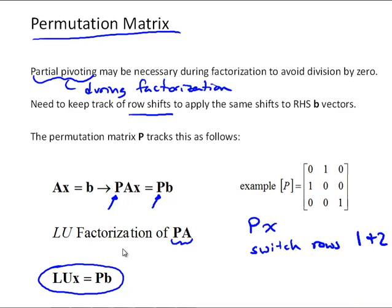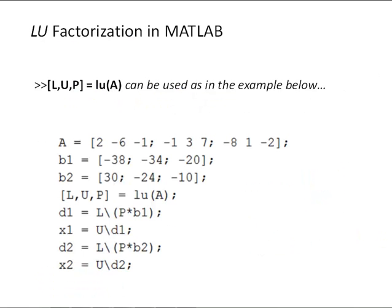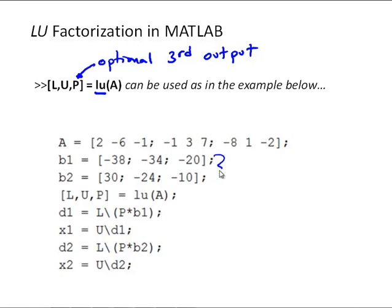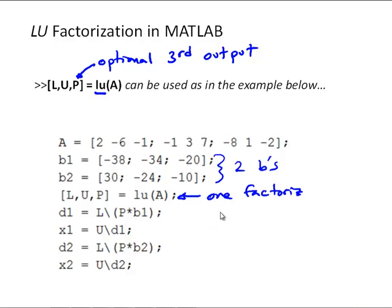Let's look at how to implement this in MATLAB. You can do an LU factorization using the built-in function LU. It has the permutation matrix as an optional third output, and in general it's a good idea to use it. Here's an example solving the same linear system A for two different right-hand side vectors. We do the factorization once — remember, you're defeating the point if you compute the factorization for every different B vector. This affects how you write code: if you're looping through multiple B vectors, make sure you're not recomputing the LU factorization each iteration.